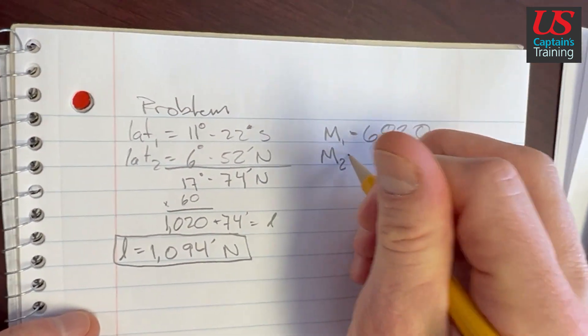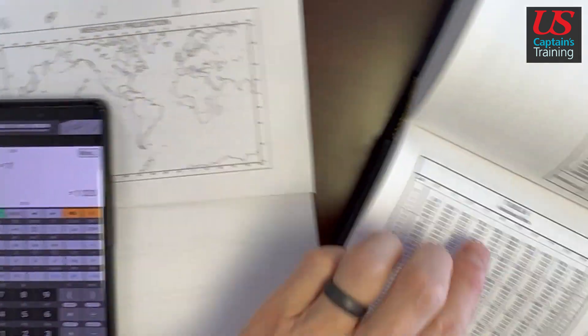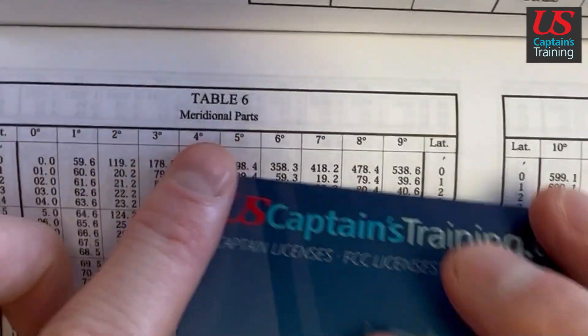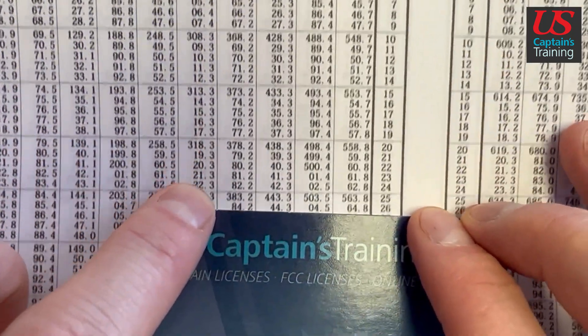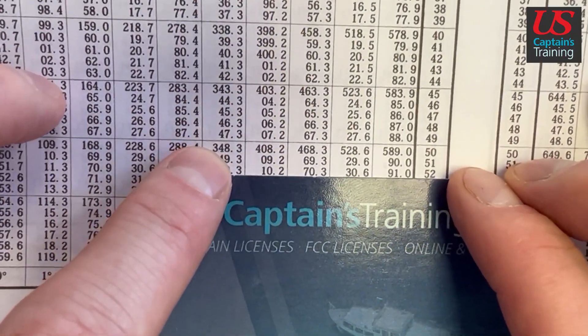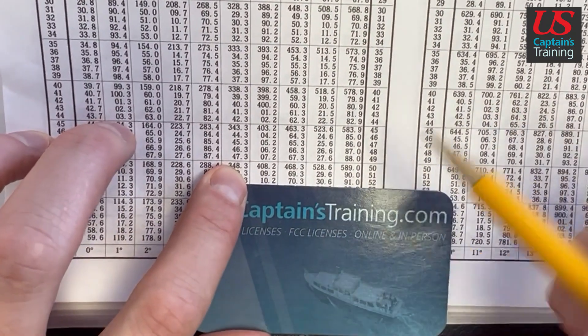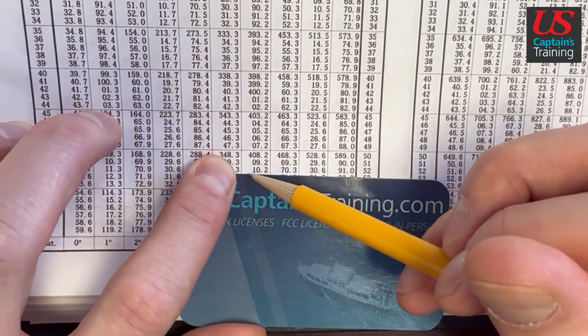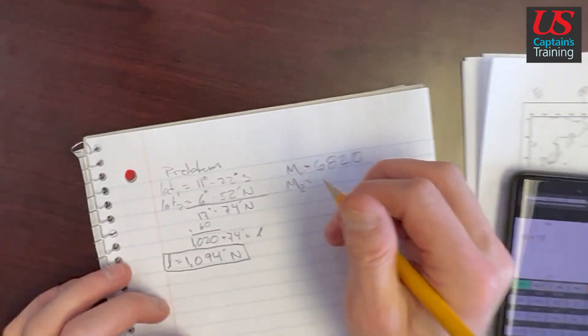Now we find m2, which is meridional parts of lat 2, 6 degrees 52 minutes. So we find 6 degrees and we find 52 minutes on the side. 6 degrees, 52 minutes. So this 4 comes down. We got 410.2.